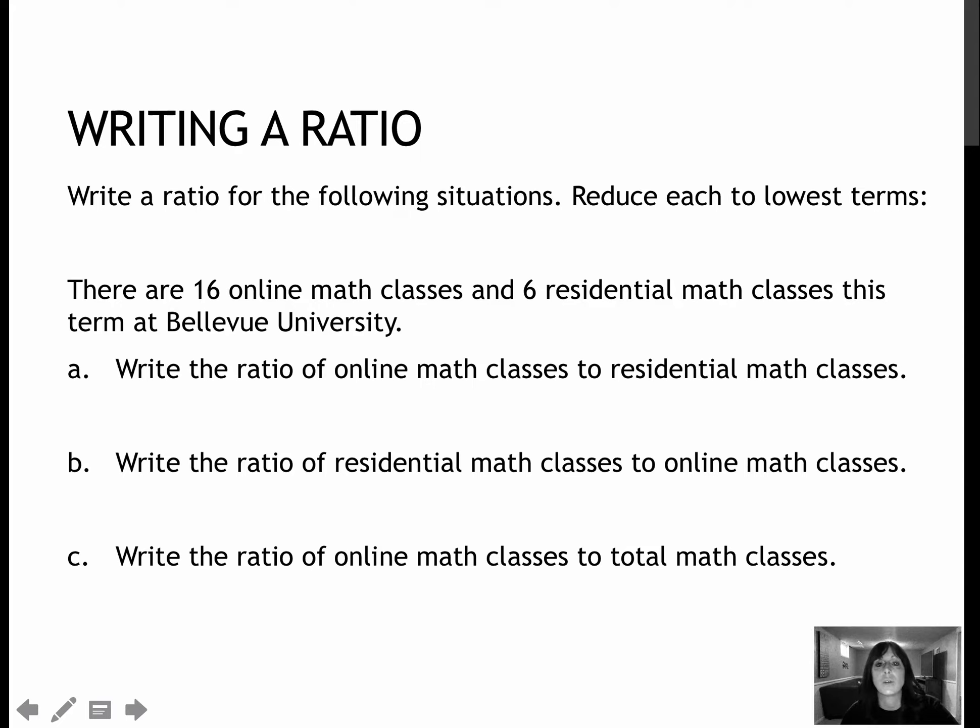We're going to do a little bit of practice on writing ratios. To write a ratio, we'll first write it as is and then we will simplify it if we are able. So there are 16 online math classes and six residential or on-campus classes this term at Bellevue University. To write a ratio of online math classes to residential math classes, I would simply put the online classes over the residential classes because notice that's the order they gave them to me, online to residential.